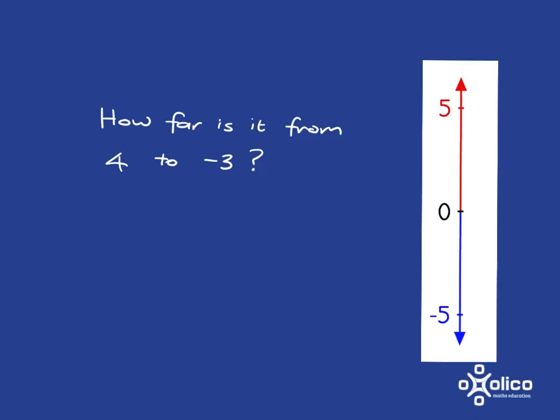Okay, so 4 would be about here on the number line and negative 3, negatives are below the 0, negative 3 would be around there. And then we can straight away use the idea that from 4 down to